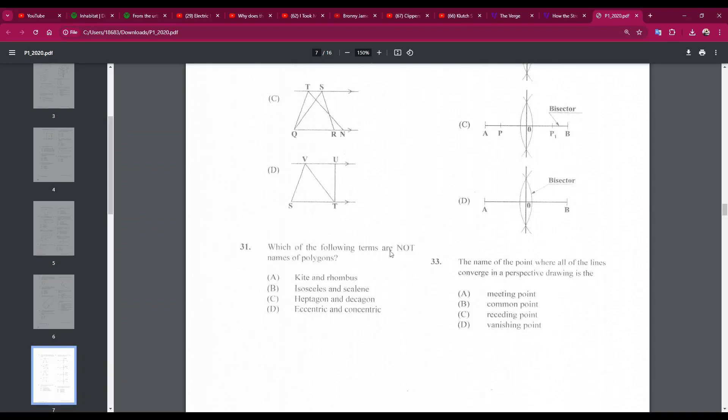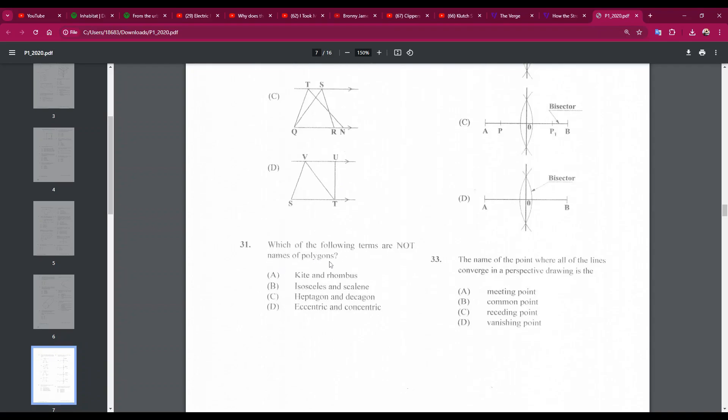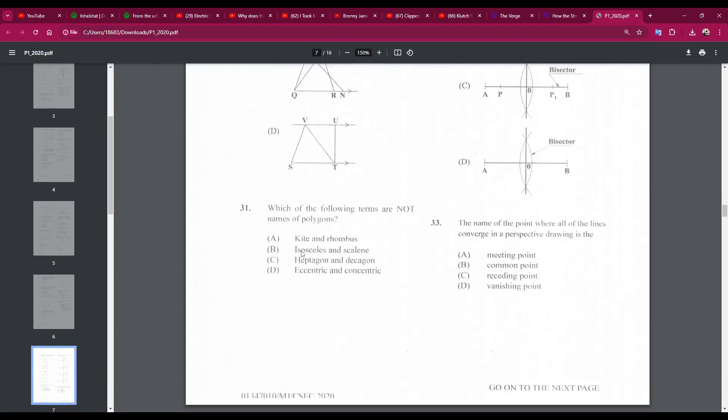Number 31: which of the following terms are not names of polygons? Kite and rhombus, isosceles and scalene, heptagon and decagon, eccentric and concentric. I will say the answer is D, eccentric and concentric. These refer to circles, and circles are not polygons. So number 31, D.